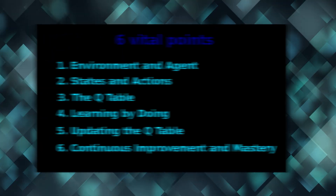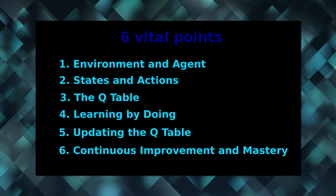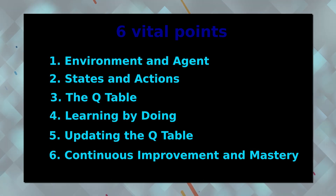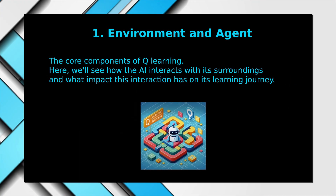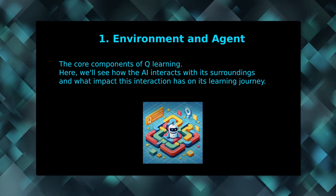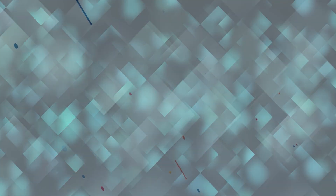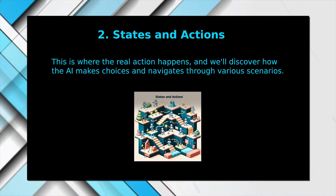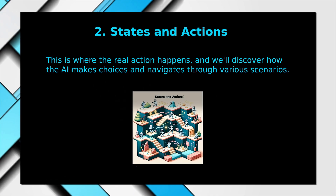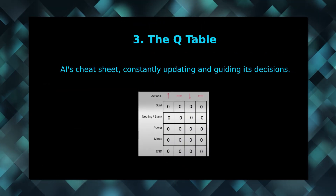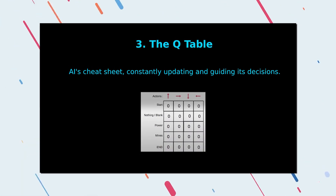Ever wondered how AI systems manage to get smarter day by day? The secret lies in a series of crucial steps that guide their learning. The first point to understand is the environment and agent — the core components of Q-Learning — where we see how the AI interacts with its surroundings and what impact this has on its learning journey. The second point involves states and actions within the environment, where the AI makes choices and navigates through various scenarios. The third key element is the Q table — think of it as the AI's cheat sheet, constantly updating and guiding its decisions.